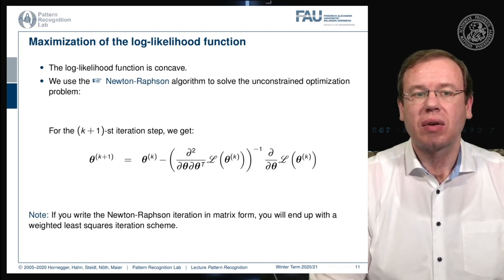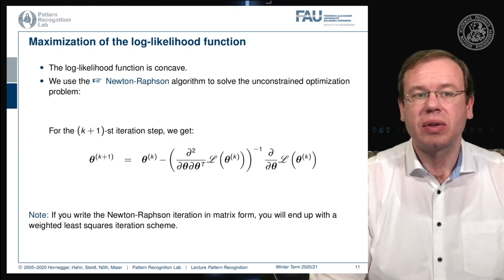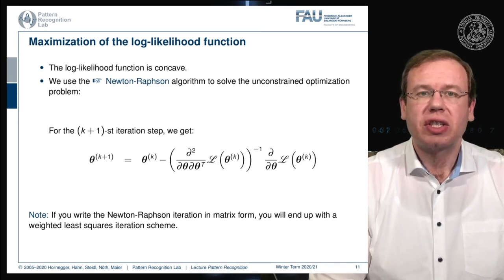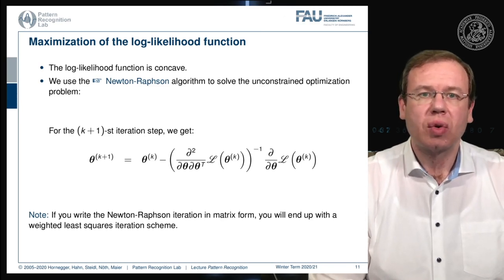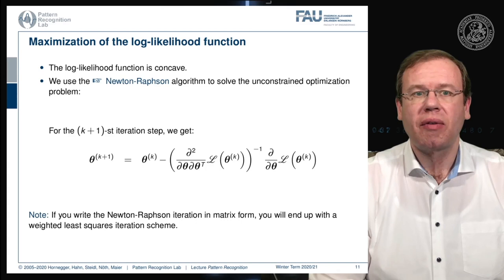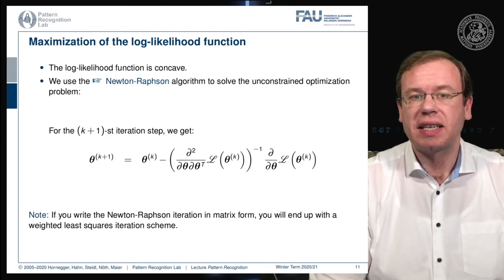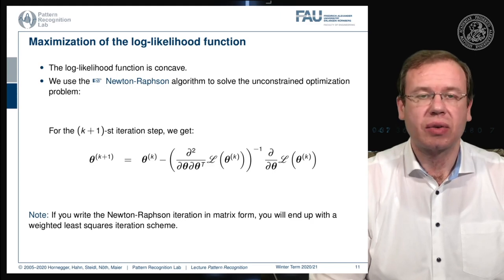You can also write this up in matrix form and then you essentially end up with a weighted least squares iteration scheme. Now the question is how do we come up with such a solution scheme, and how do we actually determine this Hessian and the gradient of the likelihood function?